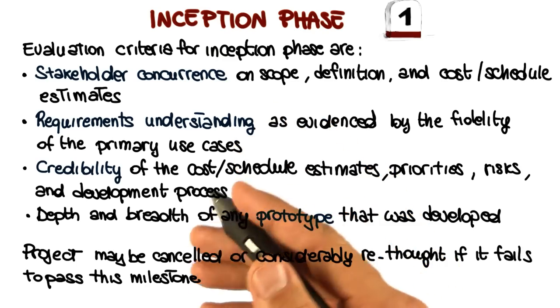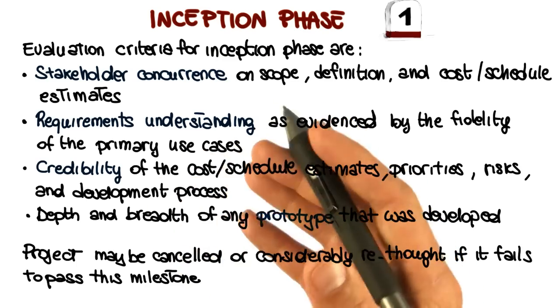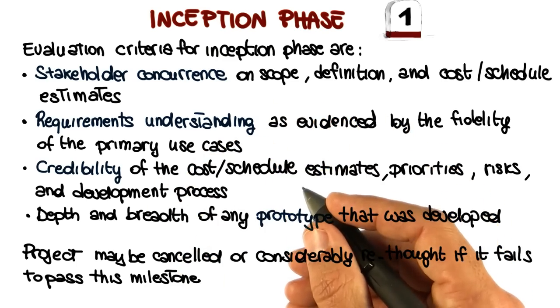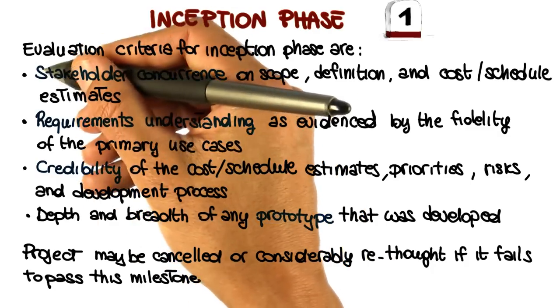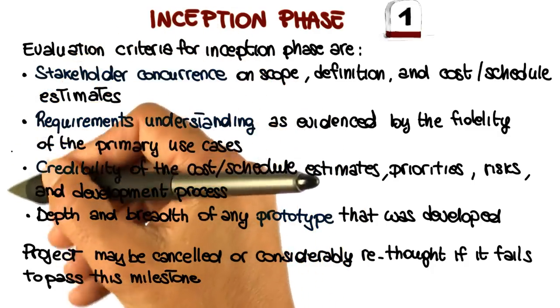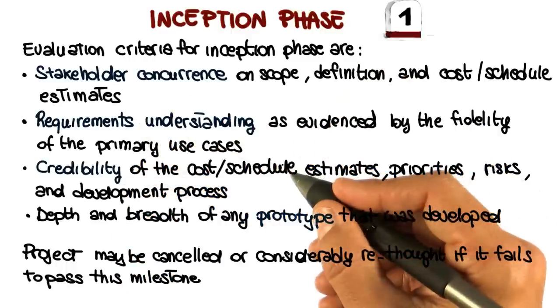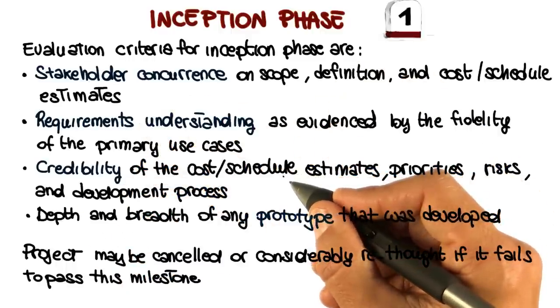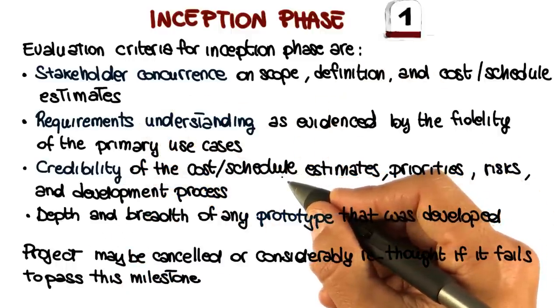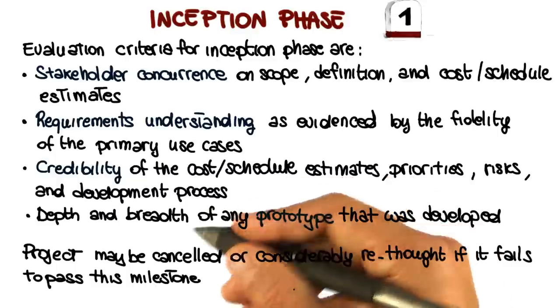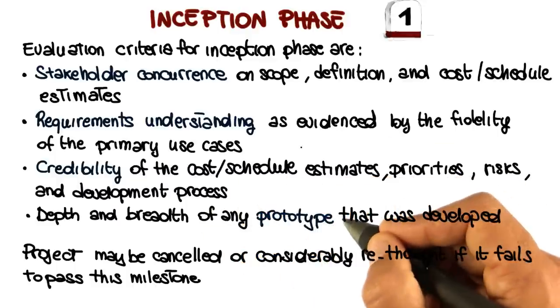So to summarize all of this in one sentence, the inception phase is the phase in which we produce the initial vision, use case model, project plan, risk assessment, and possibly prototypes for the project. And we have to make sure that all of these deliverables satisfy a set of criteria so that we can continue on the project. And otherwise we'll either cancel the project or rethink its scope or other aspects of it.